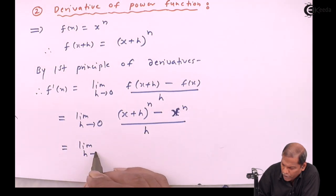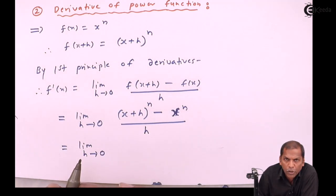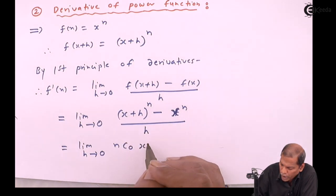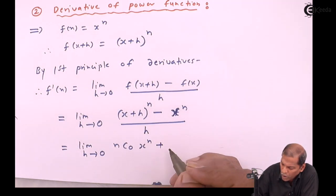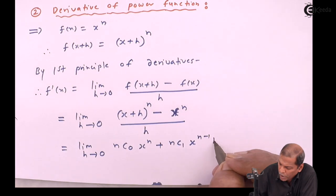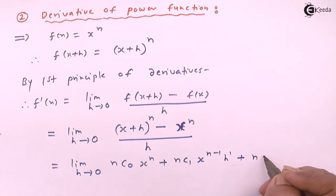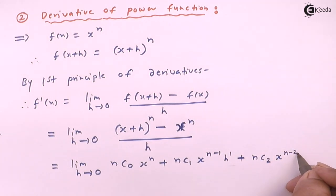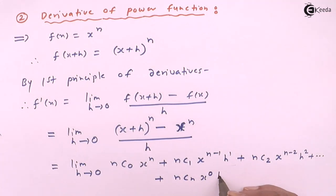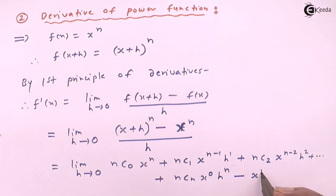That equals limit h tends to zero. Now (x+h)ⁿ — we can open this bracket and simplify using the binomial theorem. That gives us: nC0·xⁿ + nC1·xⁿ⁻¹·h¹ + nC2·xⁿ⁻²·h² + ... and the last term is nCn·x⁰·hⁿ, minus xⁿ.